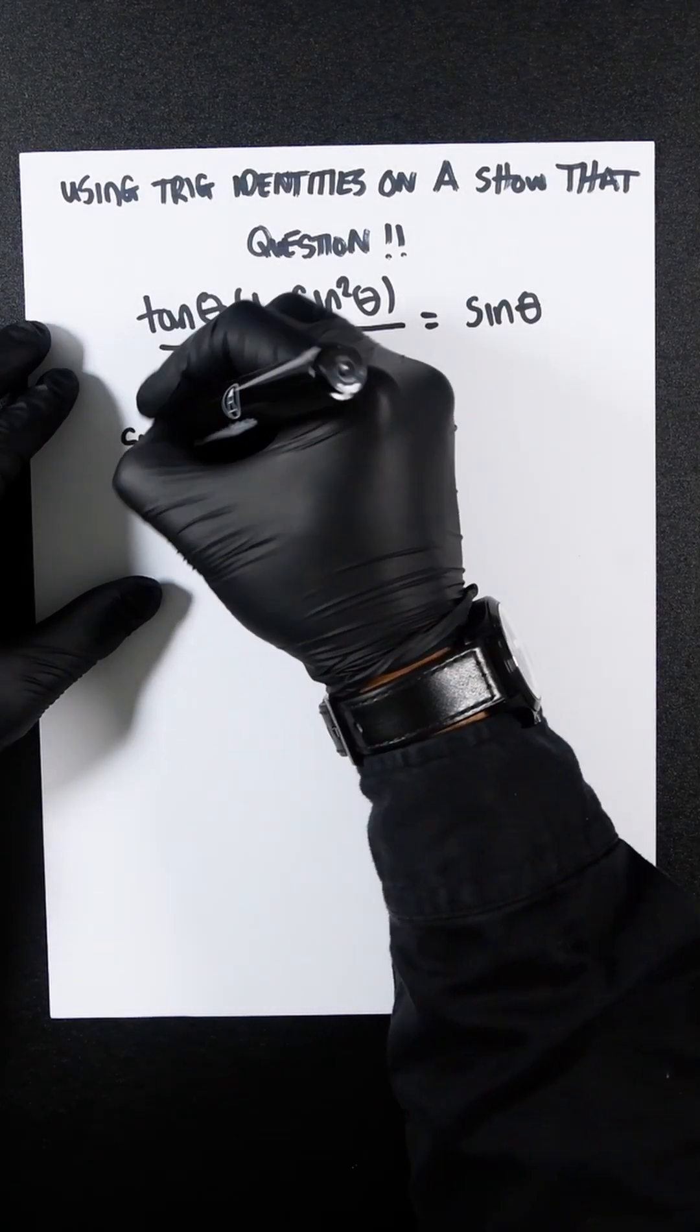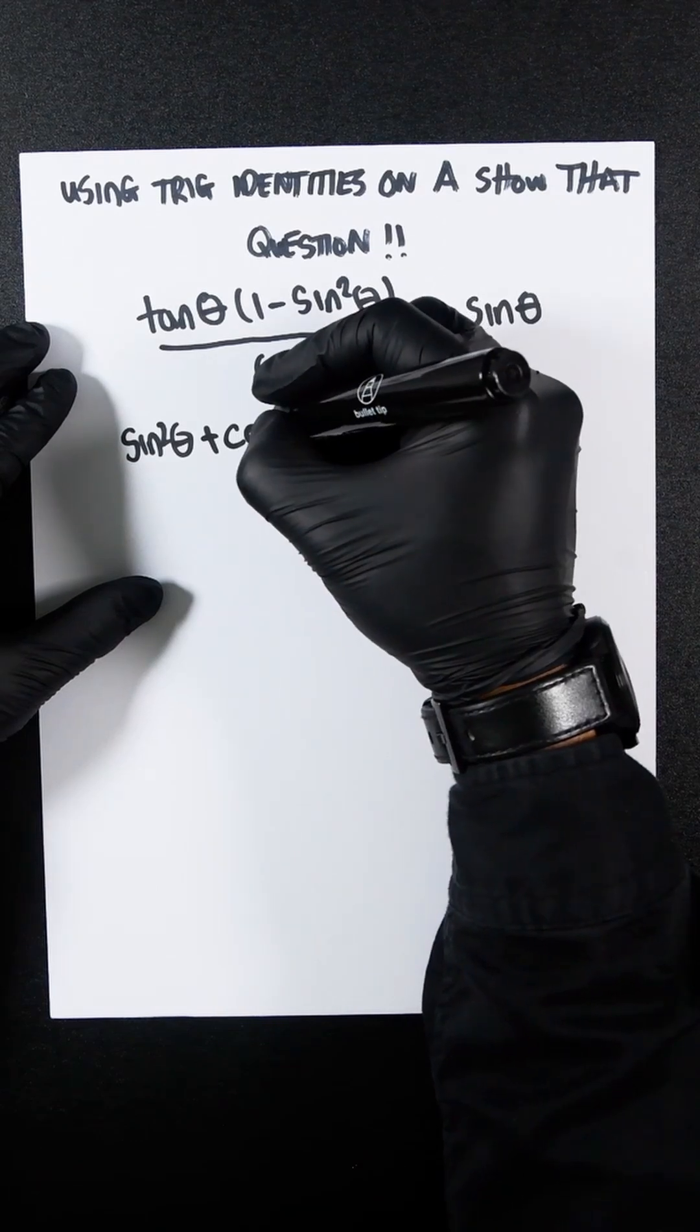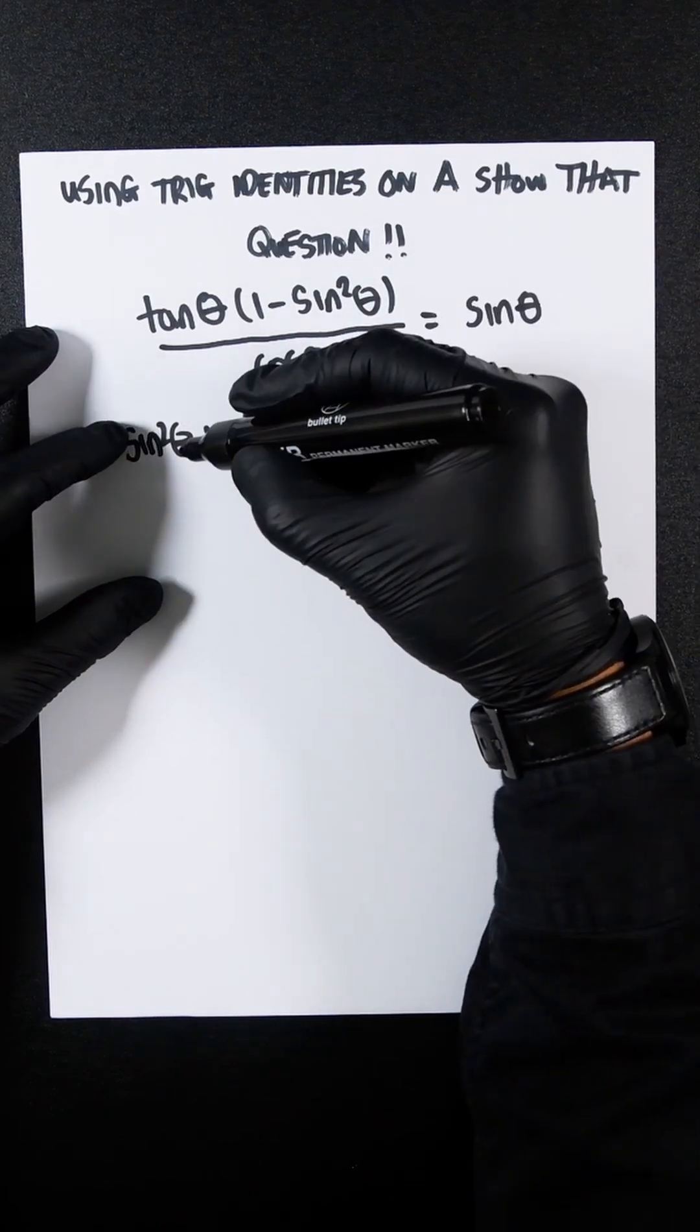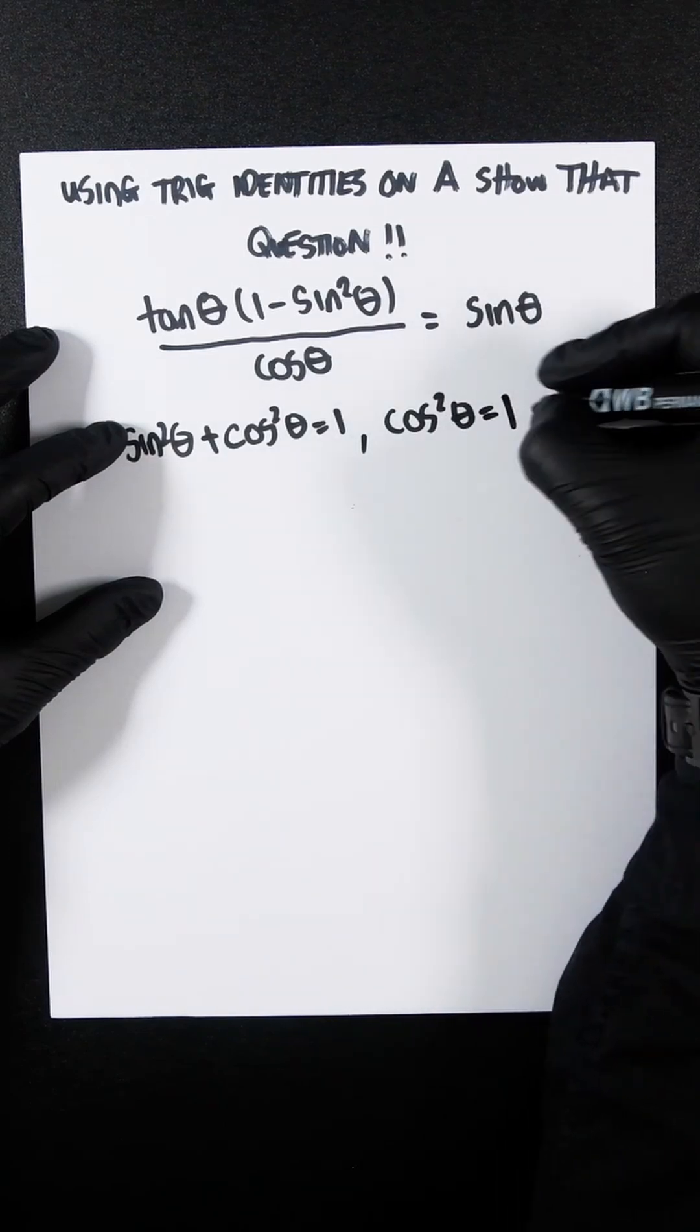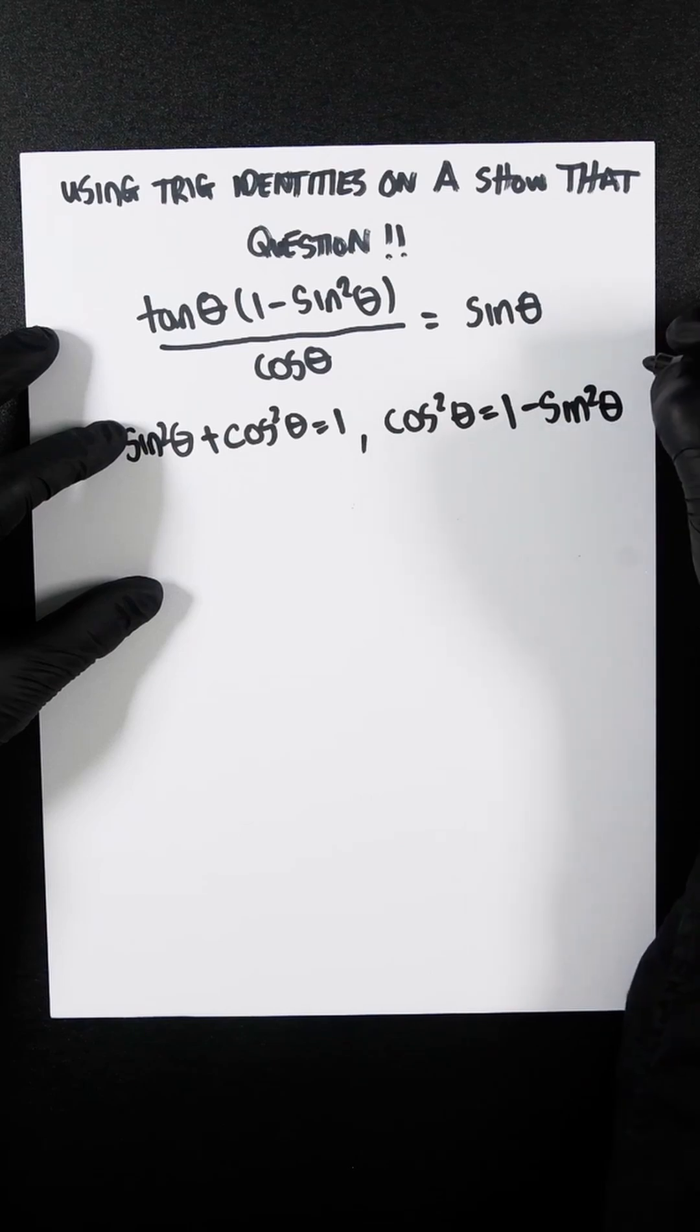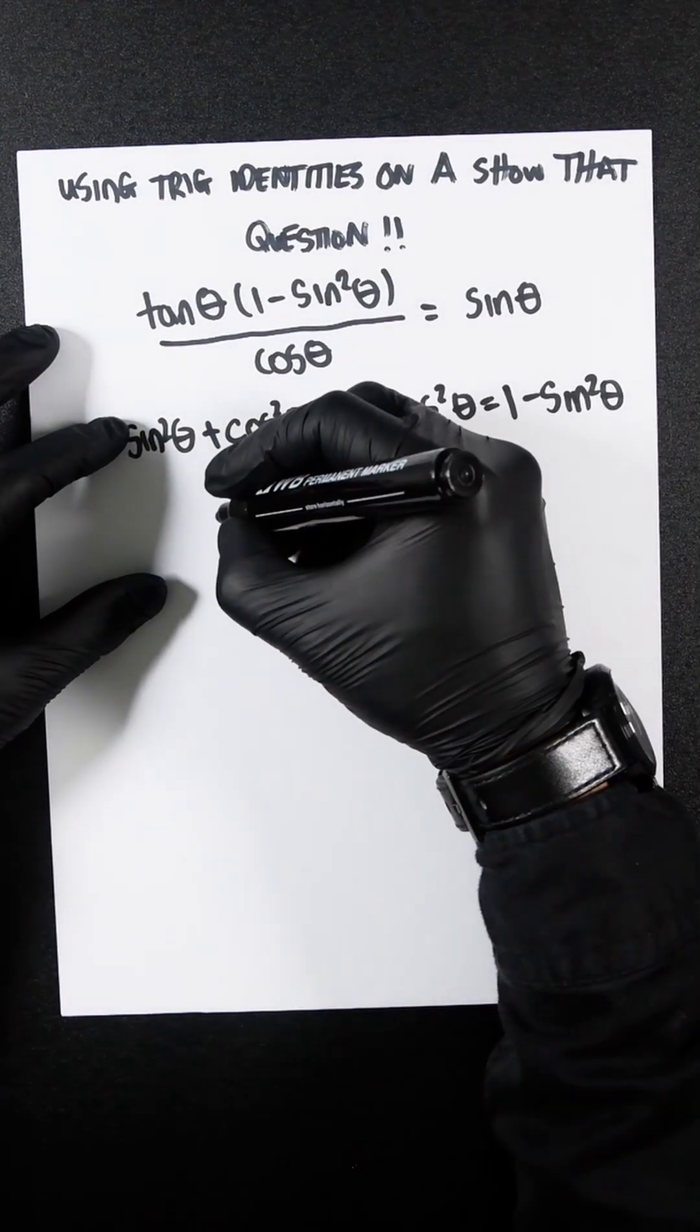So the first trig identity you should be familiar with is sin squared theta plus cos squared theta equals 1. So if we subtract sin squared theta from both sides, you're going to get cos squared theta equals 1 minus sin squared theta. That coincidentally looks a lot like that, so we can plug that in.